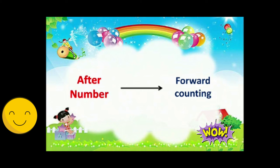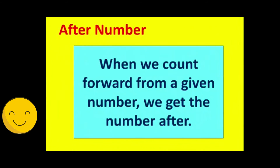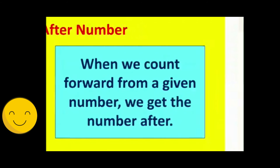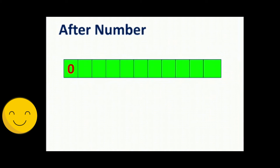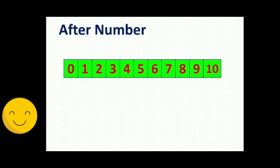After number. After number means forward counting. When we count forward from a given number, we get the number after. 0, 1, 2, 3, 4, 5, 6, 7, 8, 9, 10. This is forward counting.